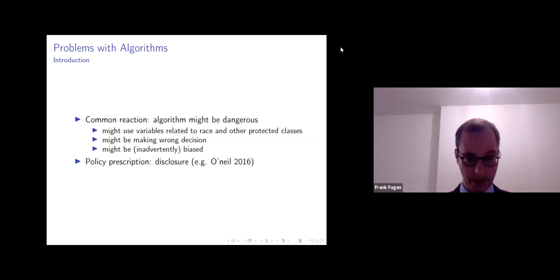So for instance, they might use variables related to race or other protected classes. They might make wrong decisions. They may be inadvertently biased, or perhaps overtly biased. And the policy prescription that comes out of a lot of this talk and a lot of this study is one of transparency or disclosure. And I think this is most forcefully or perhaps most famously argued by Cathy O'Neil in her book, Weapons of Math Destruction.